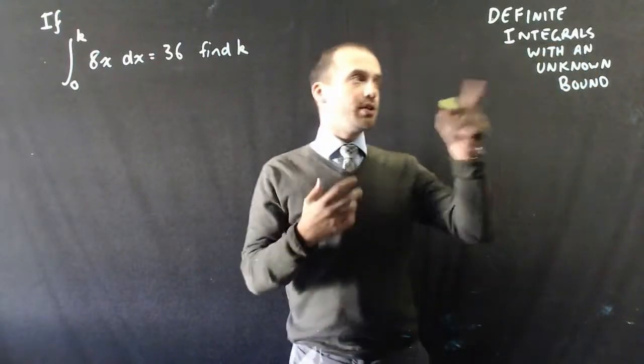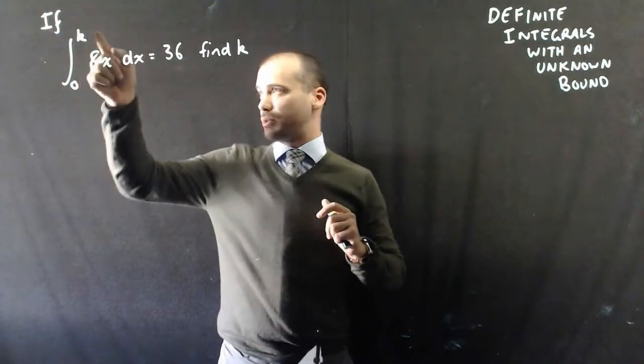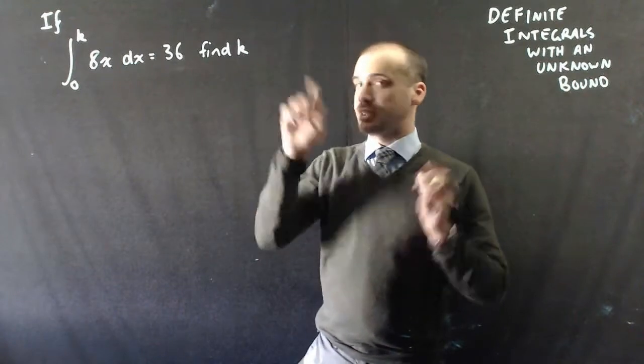All right, so this is a fun one. It's definite integrals with an unknown bound. So if between k and 0, the integral 8x with respect to x is 36, find k.